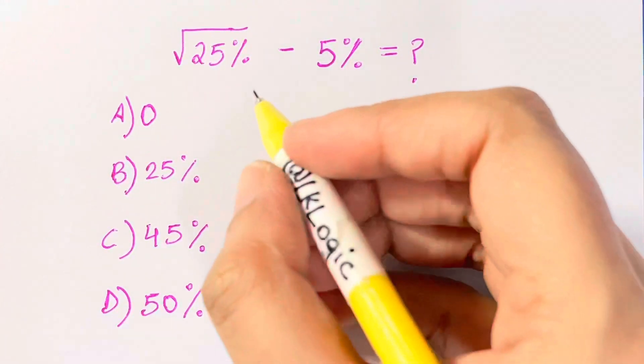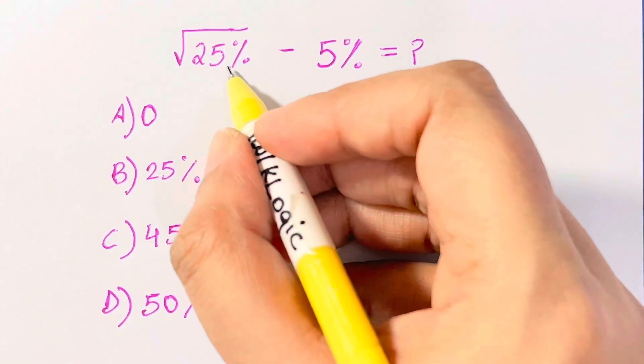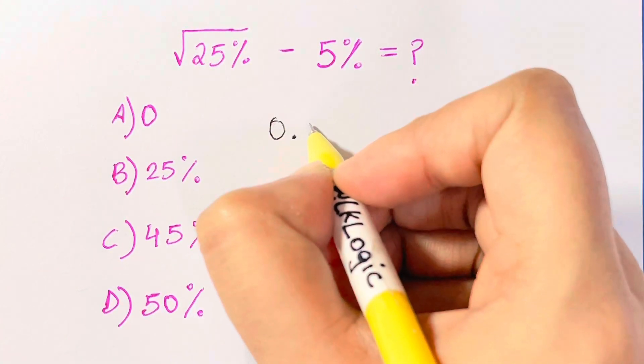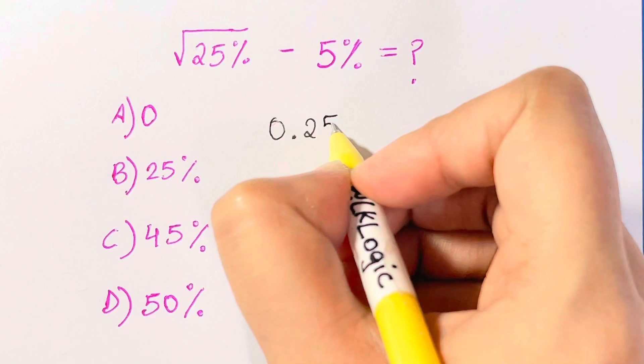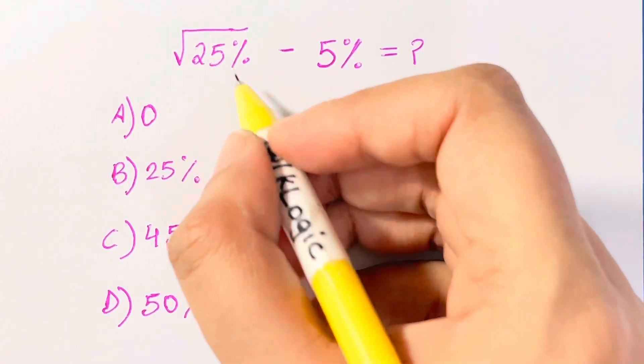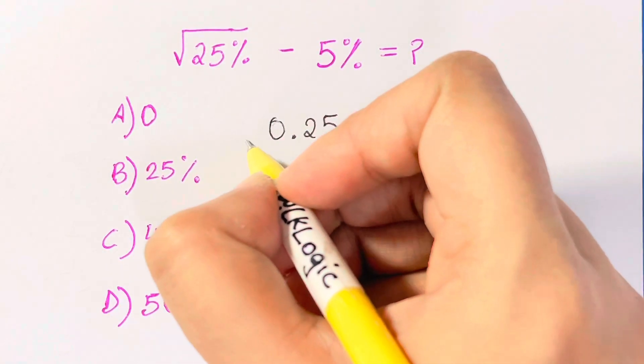Square root of 25% can be written in decimal as 0.25 because it's a percent per 100. 25 per 100, so 25 divided by 100 is 0.25, and that's under root.